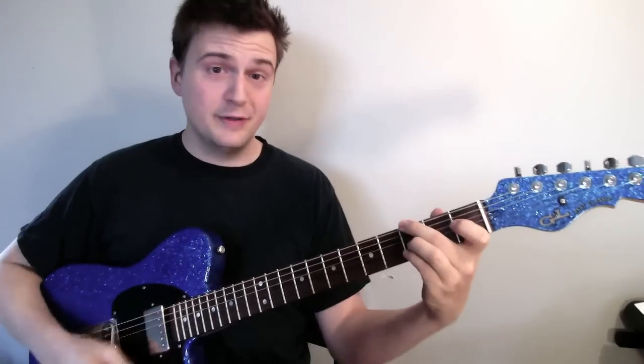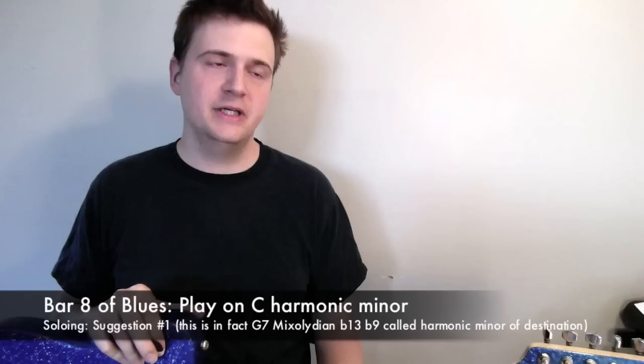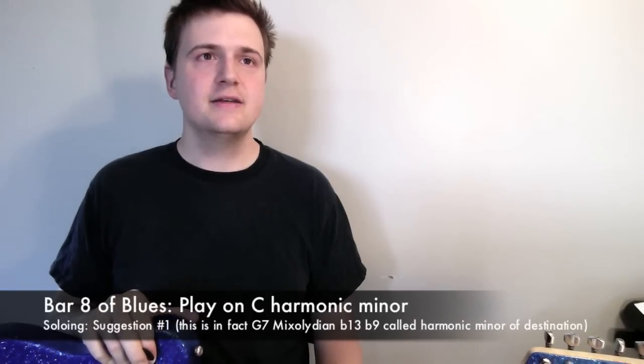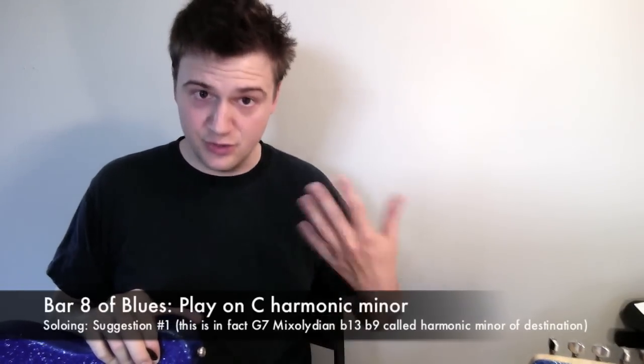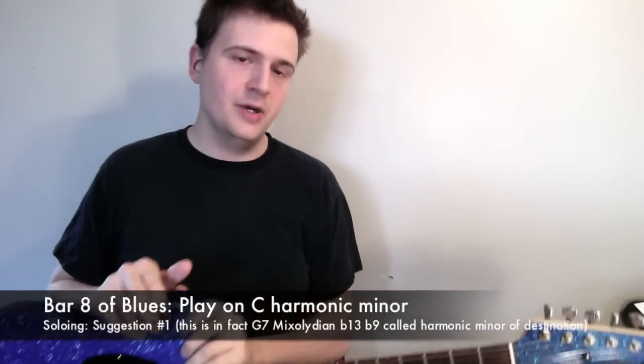Stick around because now we're looking at how you want to improv with that. Those are three almost distinct choices of scales for that bar — we're still talking about bar eight, the G7 chord. What you want to do first is, drumroll, C harmonic minor. Why C harmonic minor? We usually call this the harmonic minor of destination because we're going to C, and we employ the mode of G7 coming from C harmonic minor.